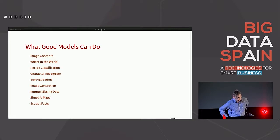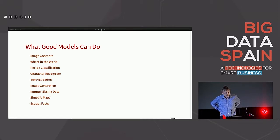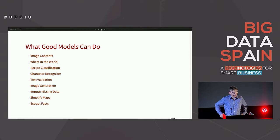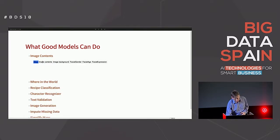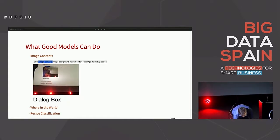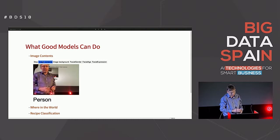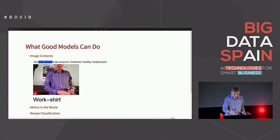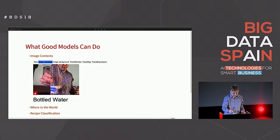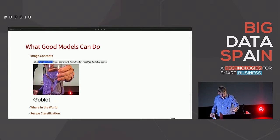If we look at what these good models can do — not restricted to low-dimensional pre-decided models — it takes a bit of a leap of imagination to think about what it means to fill in the gap in the data. Let's look at a few real models trained from real data. This one is taking very high-dimensional input — it's seeing a person, getting maybe 10,000 data points for the image — and I can hold up objects and it can figure out what they are: bottled water, goblet.